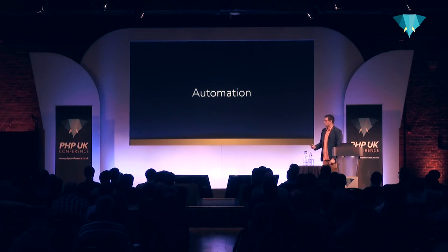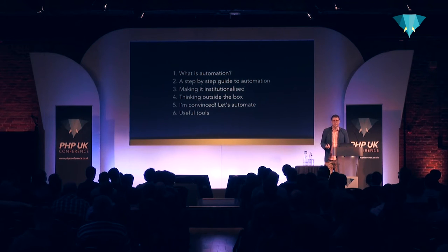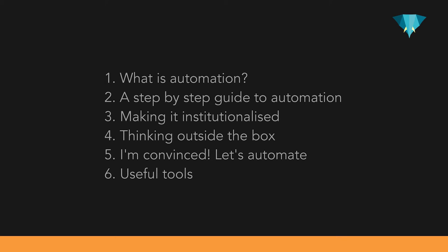There are a couple of facets to automation we're going to cover today. We're going to start by looking at what automation is, then go through a step-by-step guide. Importantly, we're going to talk about making automation institutionalized — it's not good knowing how to do it if you're not allowed to. We're going to think outside the box, learn how to automate things, and finally take a look at a couple of useful tools that will help you along the way.